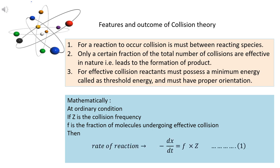To explain the collision theory mathematically, consider any reaction. If Z is the collision frequency and F is the fraction of molecules undergoing effective collision, then the rate of reaction — which equals the decrease in concentration of reactant with respect to time, that is, minus dx upon dt — will be equal to the product of the fraction of molecules undergoing effective collision multiplied by the collision frequency. In simple words: −dx/dt = F × Z.